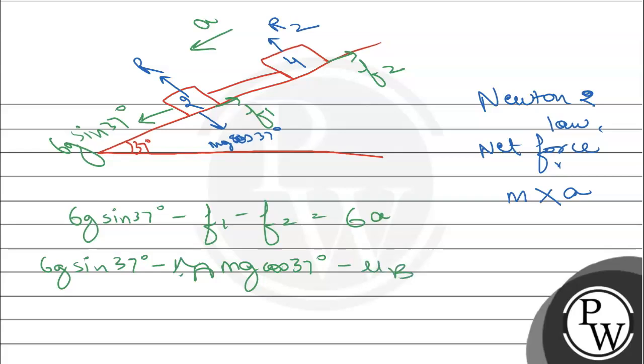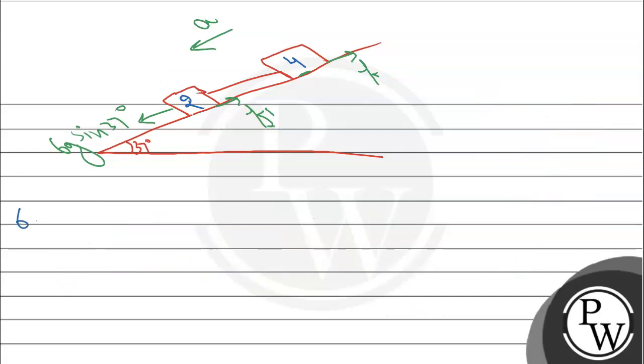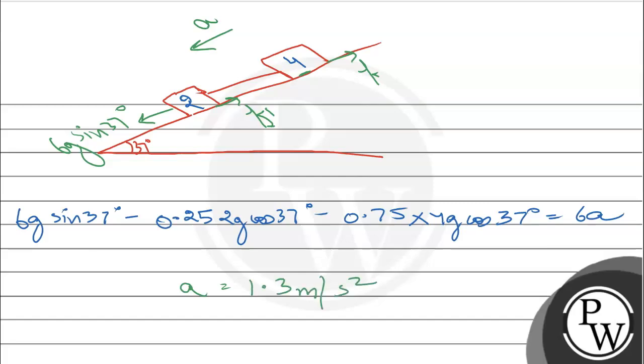Minus mu b, this block's coefficient of friction, times m g cos 37 degree. This equals 6a. So it's 6g sin 37 degree minus 0.25 times 2g cos 37 degree minus 0.75 times 4g cos 37 degree equals 6a. Common acceleration a comes out to be 1.3 meter per second square.